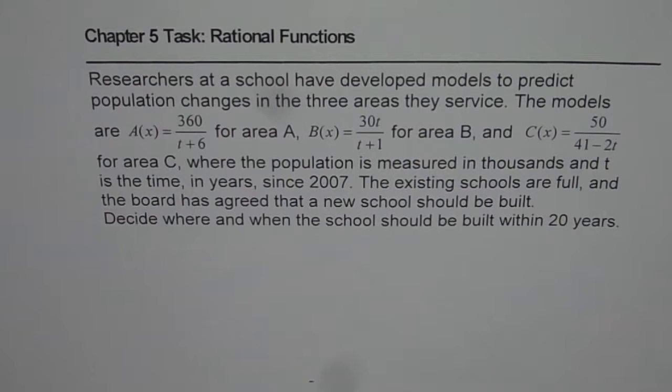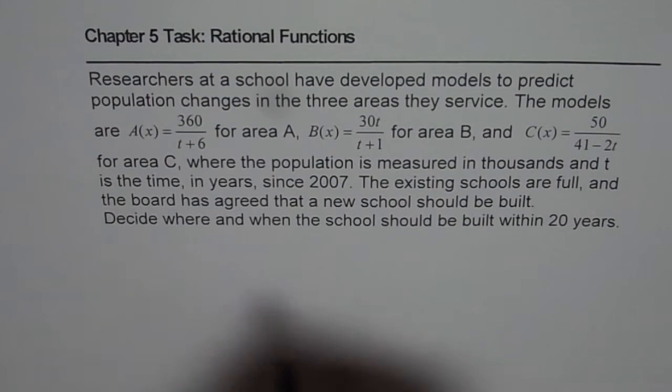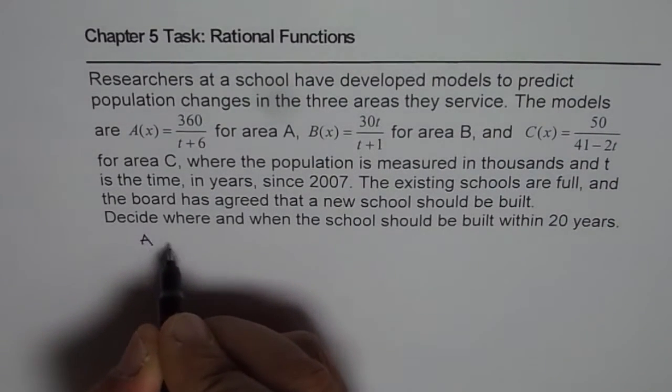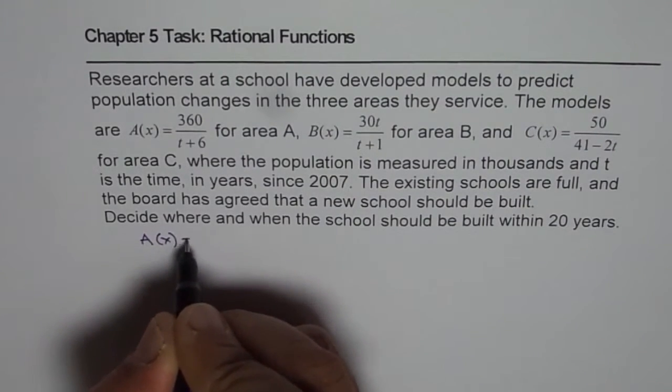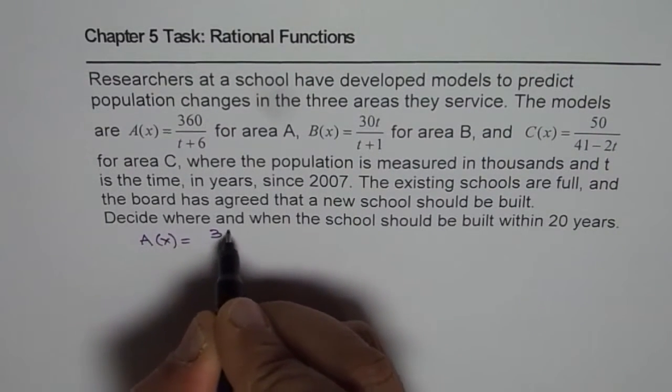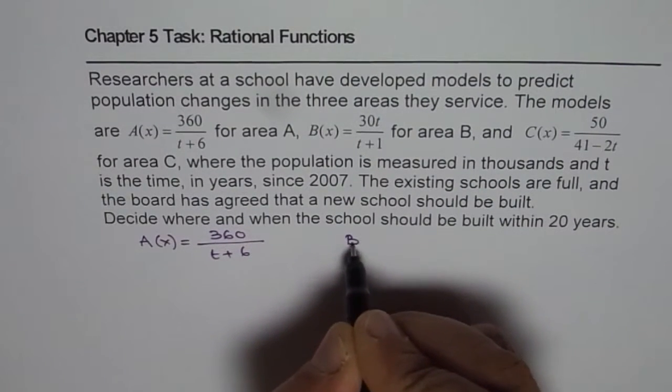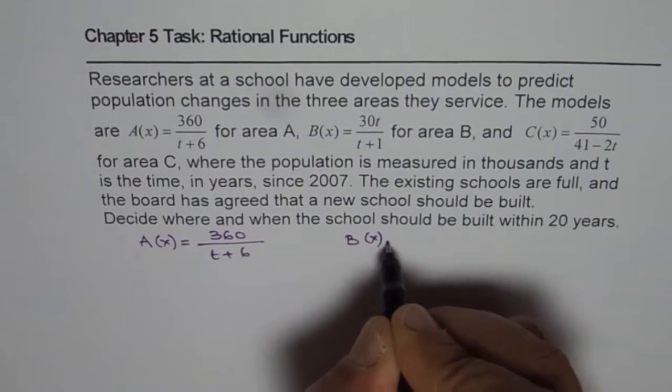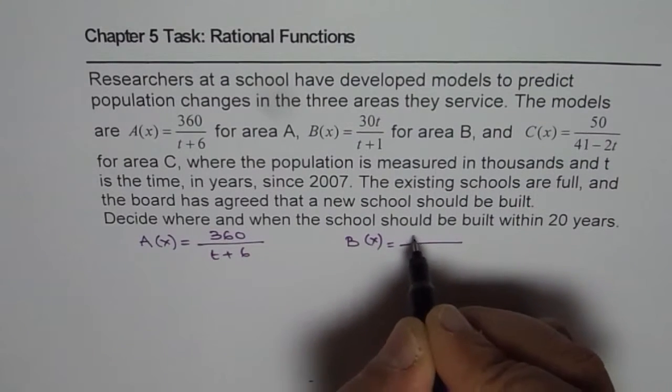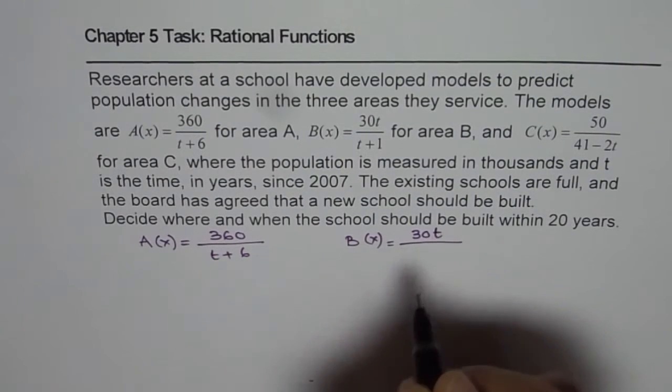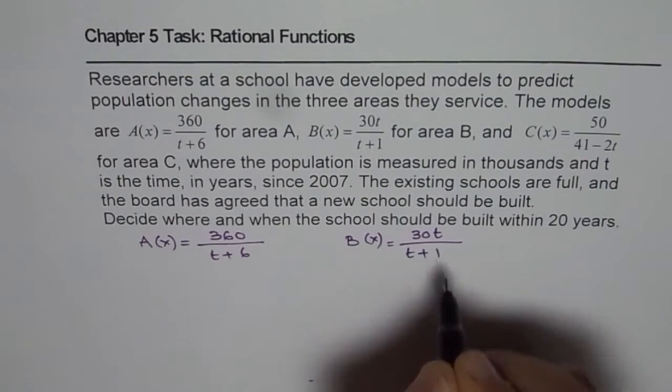So that is the question for us. We will analyze the three rational functions and then decide where and when the school should be built. We will first sketch their graphs and then we will think about it. While this question has many parts, I am just discussing the basics so that you can do the rest on your own.